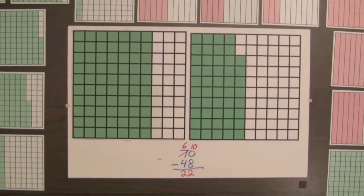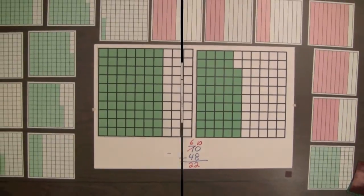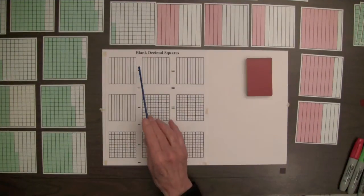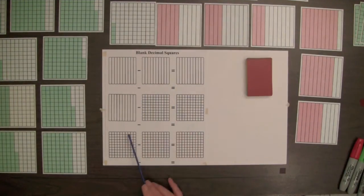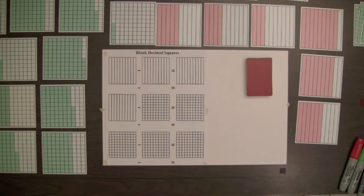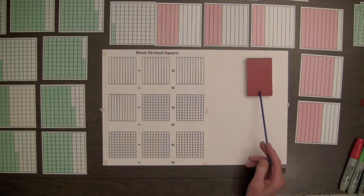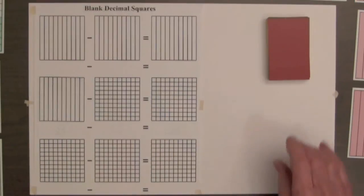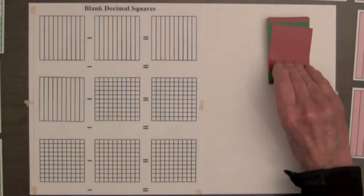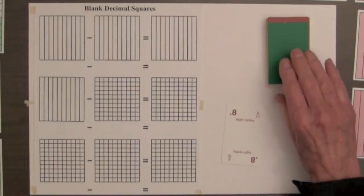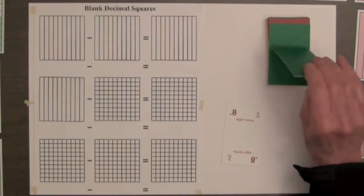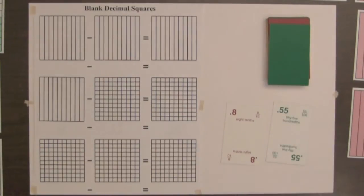This shows the similar steps that will be used for subtracting decimals. Students can shade blank decimal squares to show subtraction of decimals. These differences might be solutions to word problems or decimals from the decimal squares playing cards. For example: eight tenths minus fifty-five hundredths.